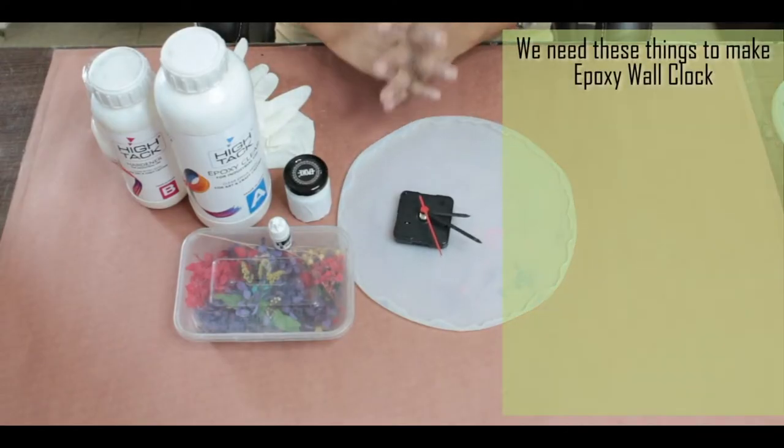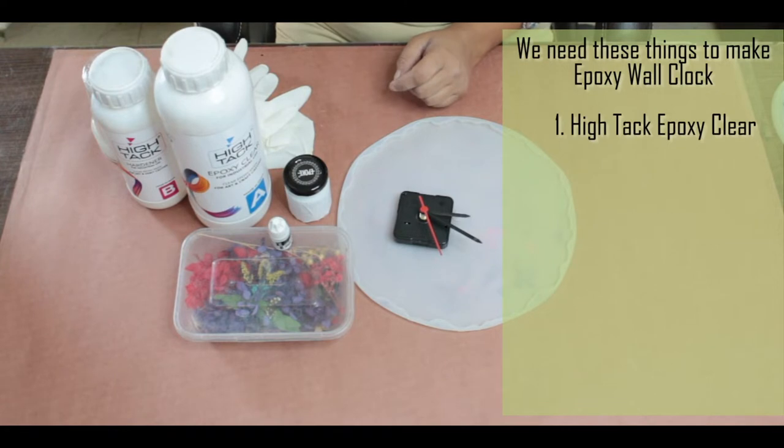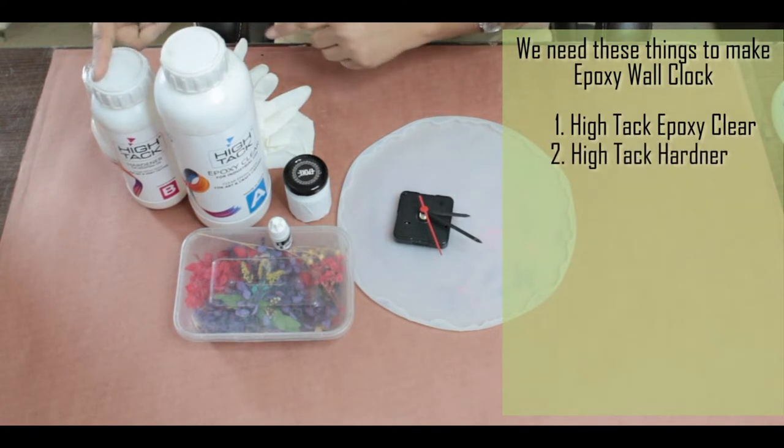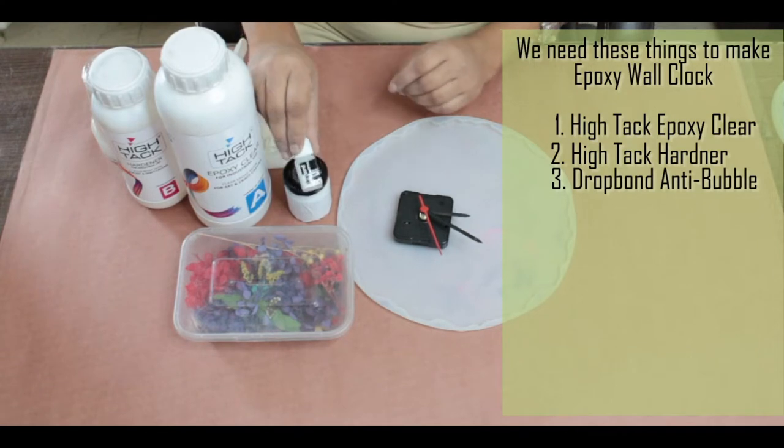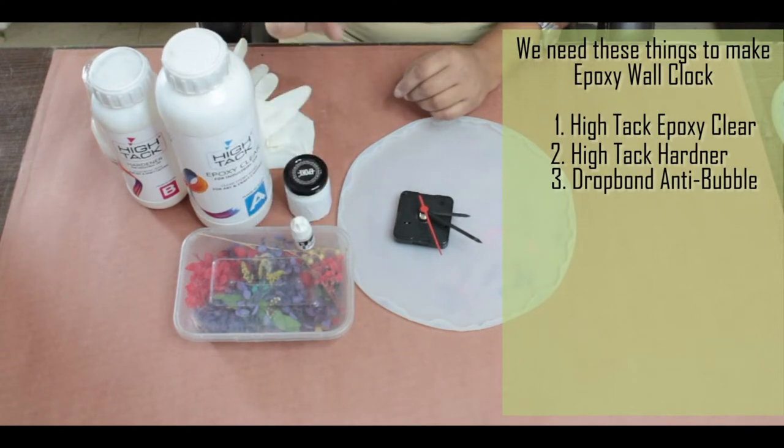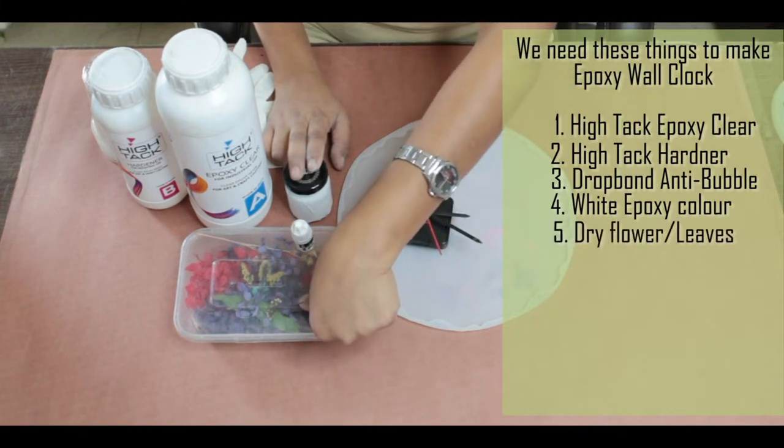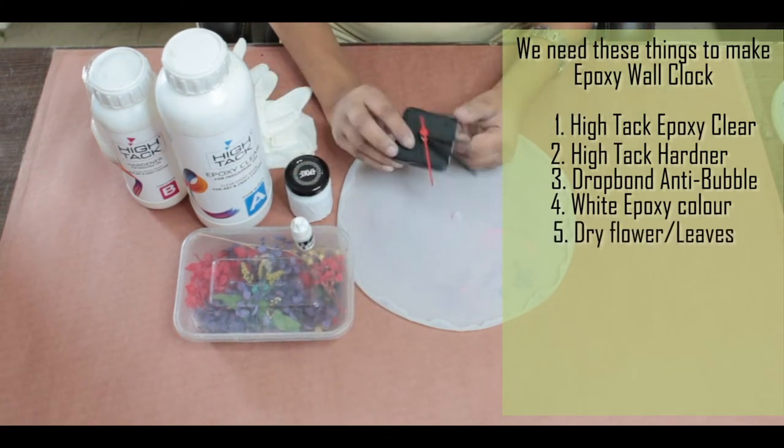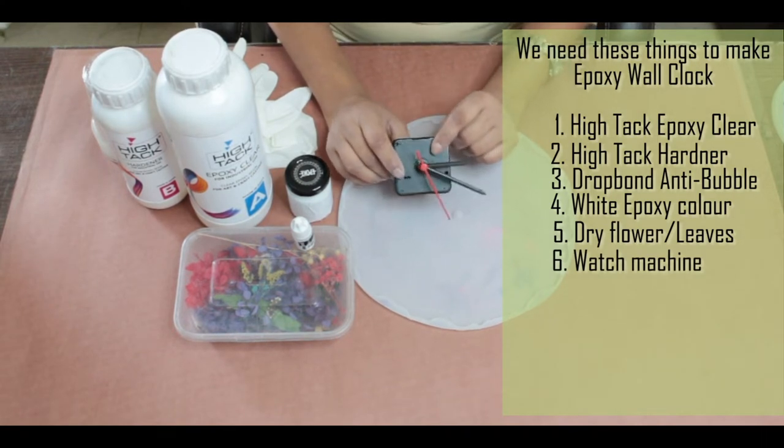Now we are going to make epoxy wall clocks. We need high-tech clear epoxy, high-tech hardener, drop-on anti-bubble, white epoxy color, dry flowers and leaves, and we are going to make a machine from the market.